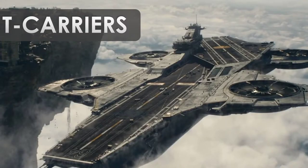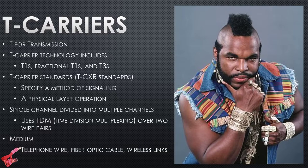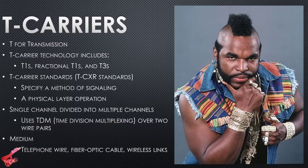T-carriers are the next level beyond routers and switches. The T stands for Transmission, and this includes things like T1s and T3s. SIU's internet connection is a combination of a T3 from one company, a T3 from another, and two T1s from another, with a system that balances all of them and can engage more at need. They specify a method of signaling and are a physical layer operation.